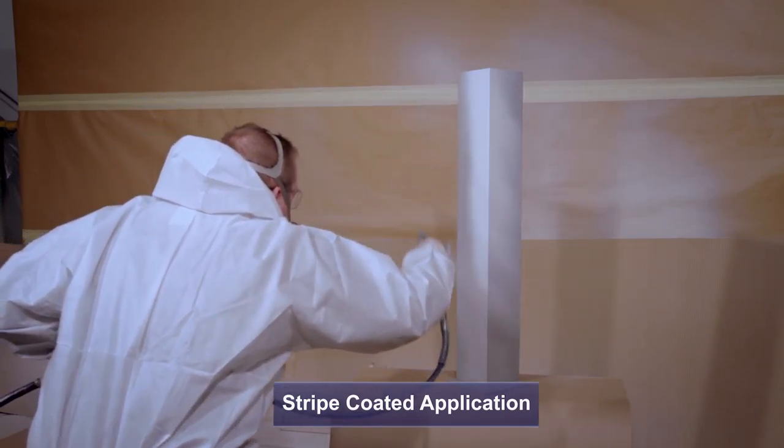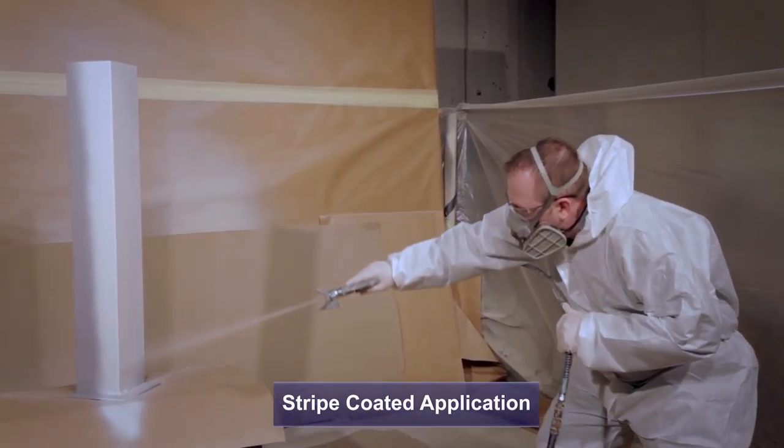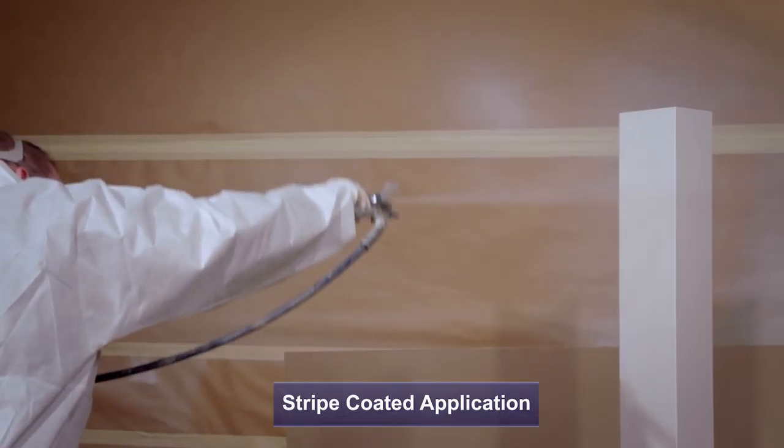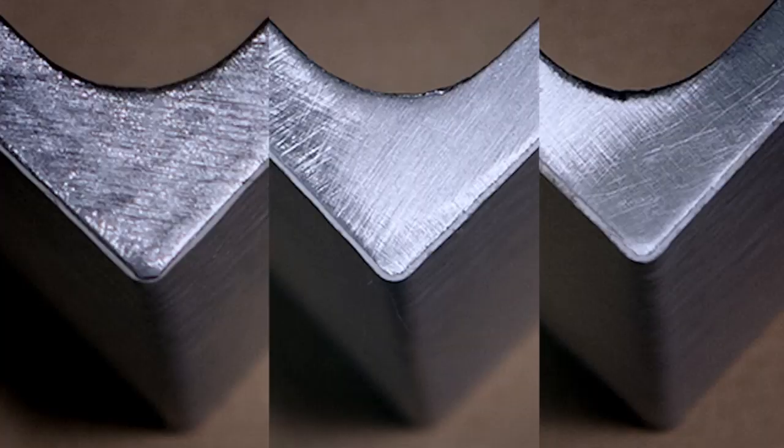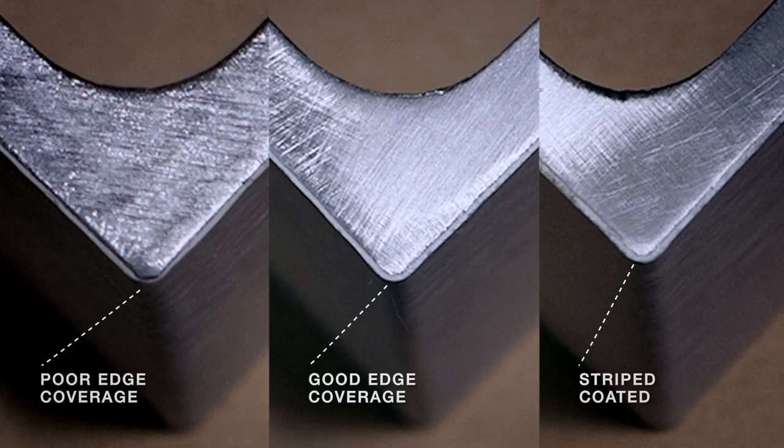Alternatively, to give extra protection, the actual corner should be stripe coated with a spray gun to ensure full coverage. Correct spray application technique on edges and corners is absolutely essential for longevity.